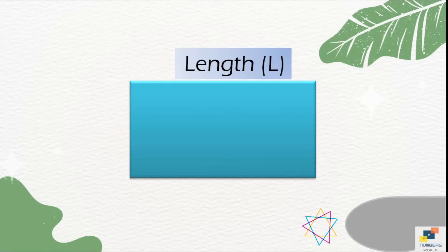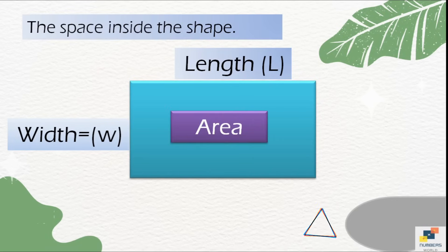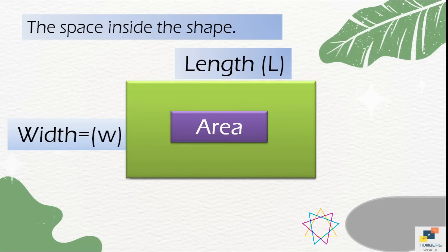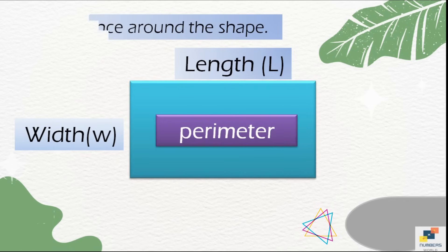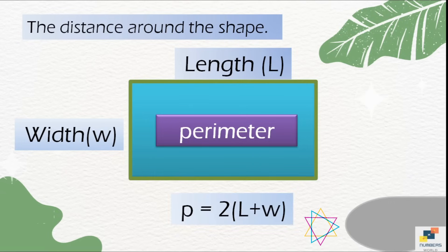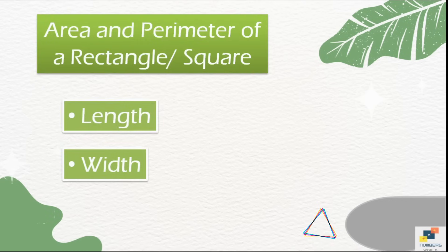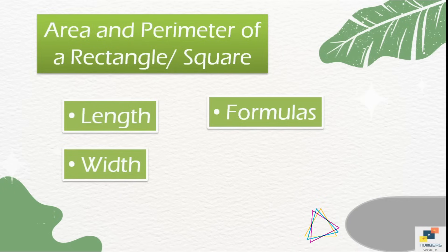The longer side of the rectangle is known as length and the other side is known as width. Area is the space that is covered by a shape, or the space inside the shape. The formula of area is length multiplied by width. Perimeter is the distance around the shape, or the boundary line of the shape highlighted in green. The formula of perimeter is equal to 2 × (l + w).